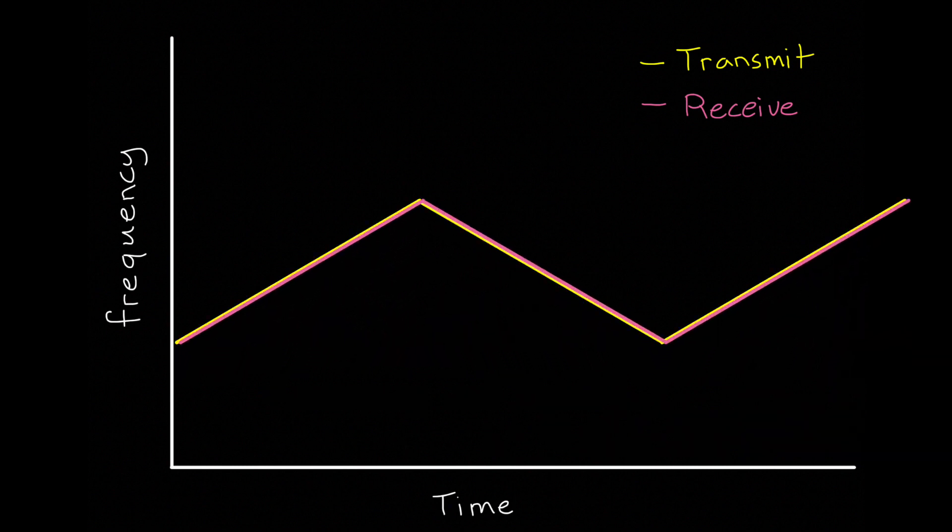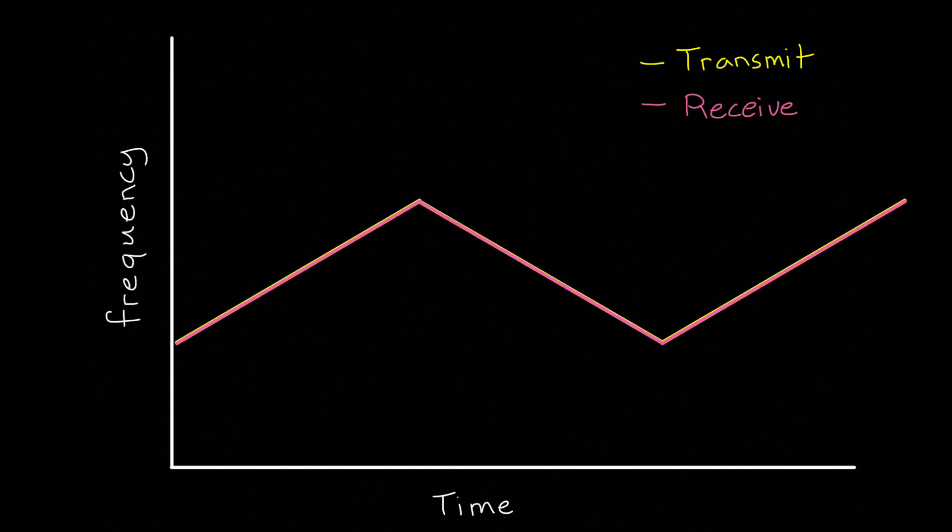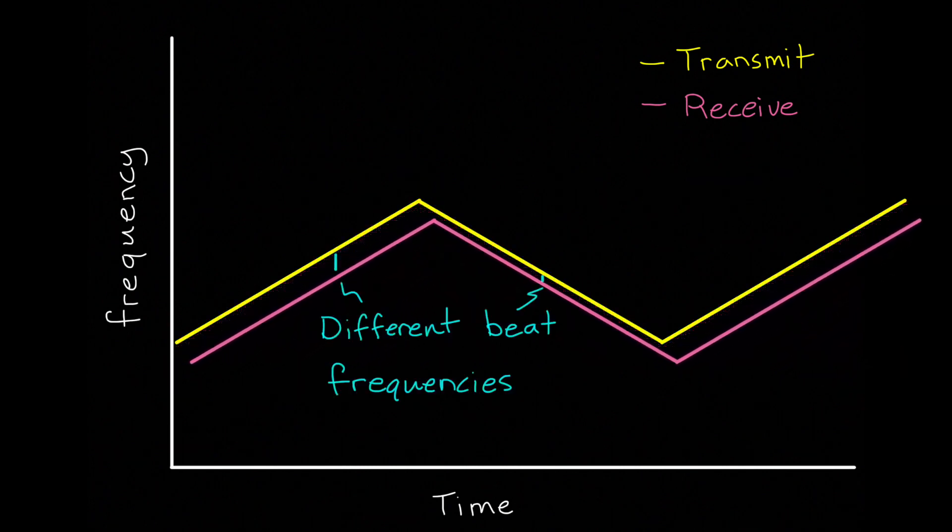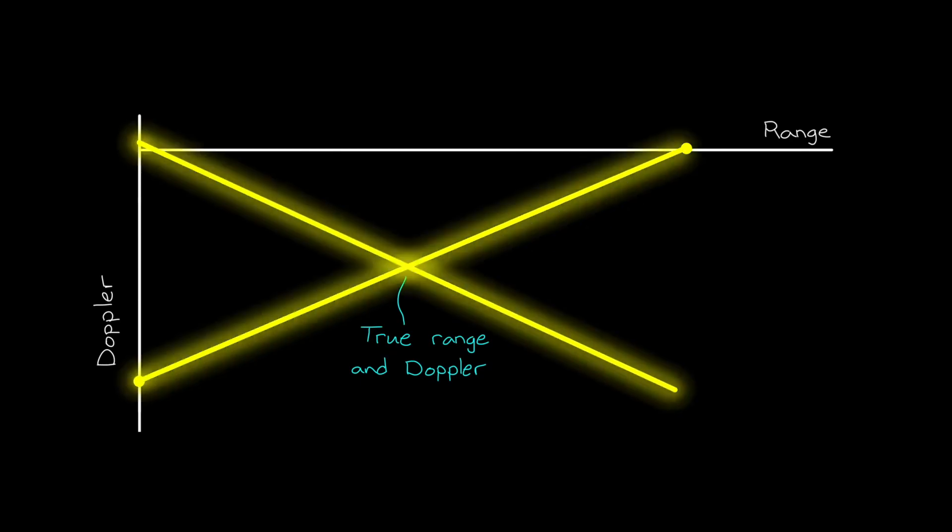When an object is at a distance, but not moving, then both the rising and falling sides are delayed in time. This produces two different beat frequencies, one that looks like a positive Doppler and one that looks like a negative Doppler. Again, those cancel out, and we can determine that the object is not moving. Plus, by looking at these two beat frequencies, we can separate Doppler from range with any combination of the two. Back on the range Doppler chart, the beat frequency for downward sloping modulation produces a second possible set of answers, and the intersection of the two is the true range and Doppler of the object. This is how triangular frequency modulation can determine range and radial velocity of a single object.